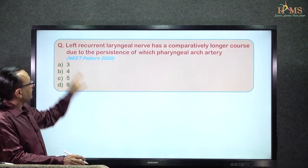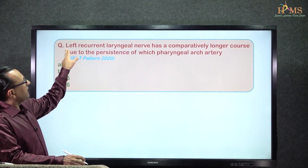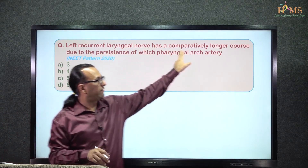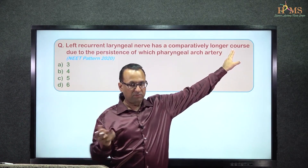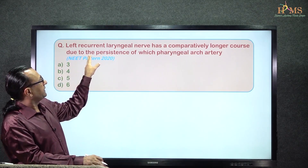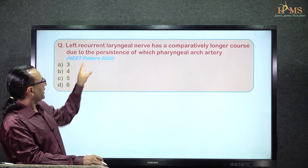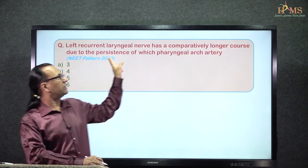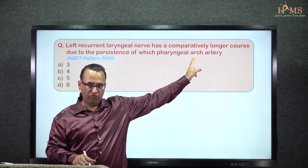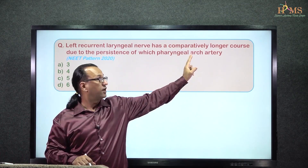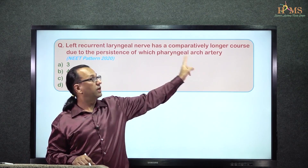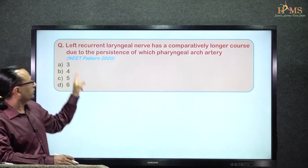Here we have a question asking why the left recurrent laryngeal nerve is comparatively longer compared with the right side. And why there is this discrepancy, because on one side there is persistence of some pharyngeal arch artery. So which pharyngeal arch artery is persisting on the left side? That is the question.